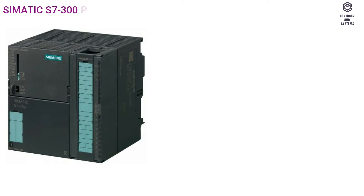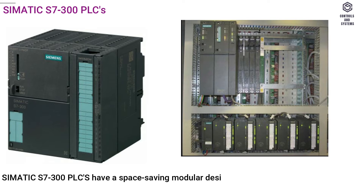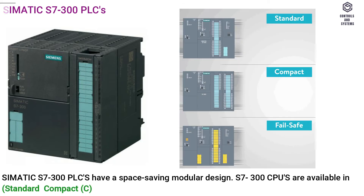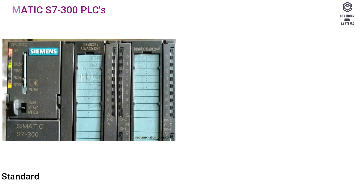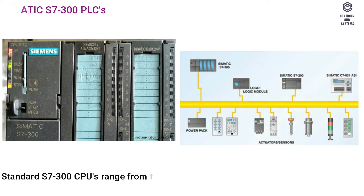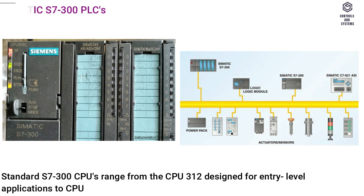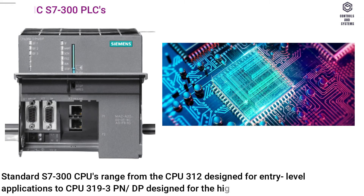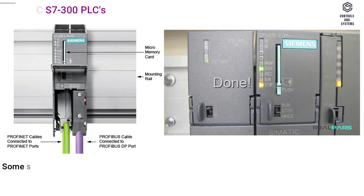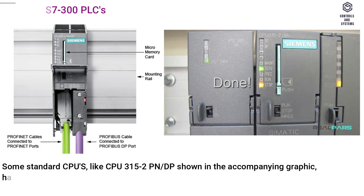Somatic S7-300 PLCs have a space-saving modular design. S7-300 CPUs are available in Standard, Compact (C), Failsafe (F), and Technology (T) versions. Standard S7-300 CPUs range from the CPU 312 designed for entry-level applications to CPU 319-3P and DP designed for the highest performance range. Some standard CPUs, like CPU 315-2PN/DP shown in the accompanying graphic, have integrated PROFINET and PROFIBUS DP ports.